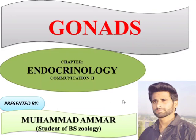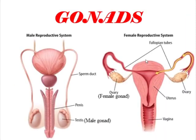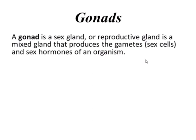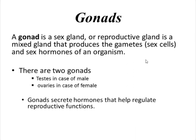Hello guys, I am Muhammad Ammar and in this video I am going to talk about the last topic of the endocrine system, or endocrinology — the last gland of the mammalian endocrine system: the gonads. The gonads are the sex glands or reproductive glands, and are mixed glands that produce the gametes — that is, the sperms or the eggs — and also produce the hormones of an organism. The gonads secrete hormones that help regulate the reproductive functions as well as the reproductive structures of male and female.